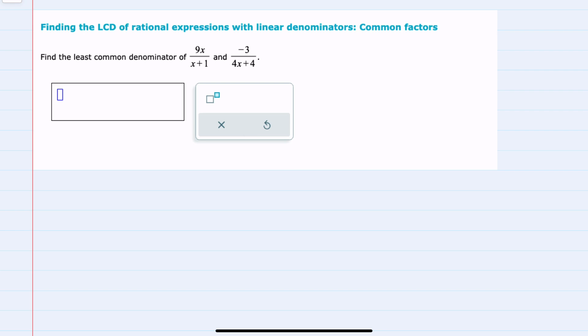We have two fractions here and we're asked just to find the least common denominator. The first fraction has a denominator that is in simplest form, x plus 1.